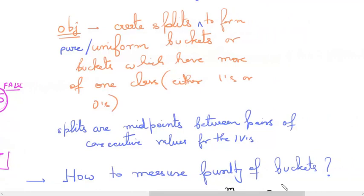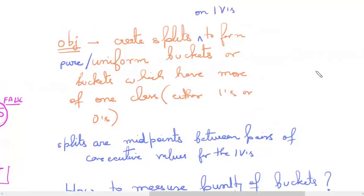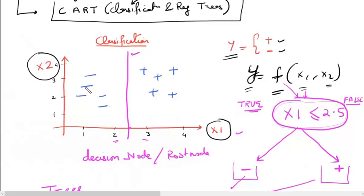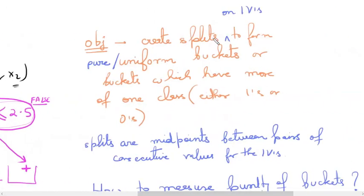Let us understand the theory behind the decision tree and then look at the math that happens at the backend. The objective of a decision tree is to create splits on independent variables — not the dependent variable. In the previous example we split on x1 and x2, not on y. Y is our plus and minus; the separation of plus and minus is the result of the split, but the splits are made on the independent variables.